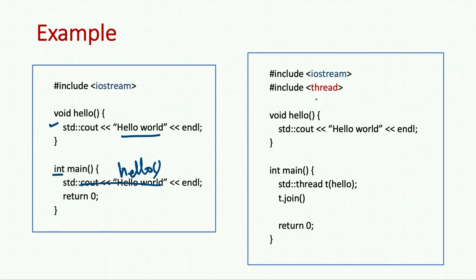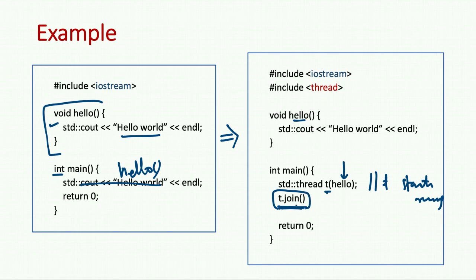To make it multi-threaded, let's say we run this function from another thread. Here main thread starts, then we create a thread T and initialize it with the function hello. So here T starts running. We don't need to call start to make it run. Here you see we call join.